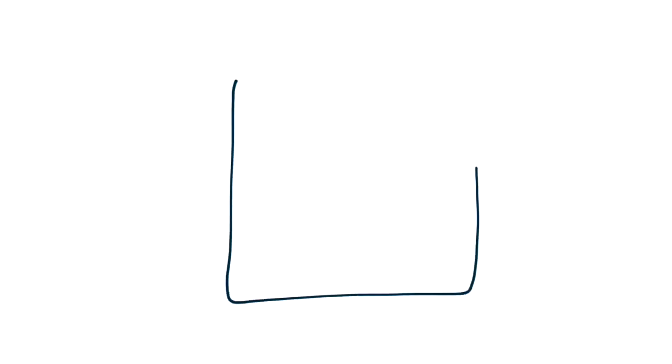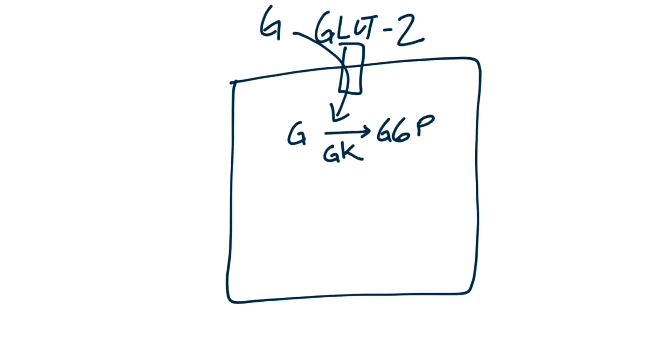This is a pancreatic beta cell. And on the cell surface, there are insulin-independent GLUT2 channels, which allow glucose to enter the cell. As glucose enters the cell, it is converted from glucose to glucose-6-phosphate, G6P, by the enzyme glucokinase. It's then broken down by the glycolytic pathway, and as a result, the ATP concentrations rise.